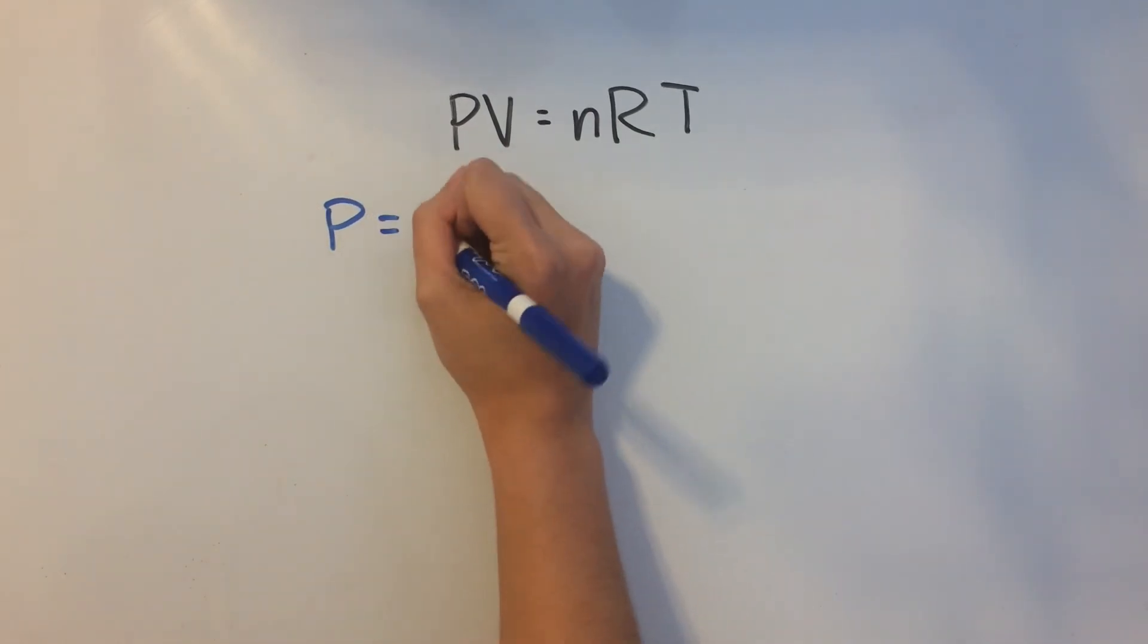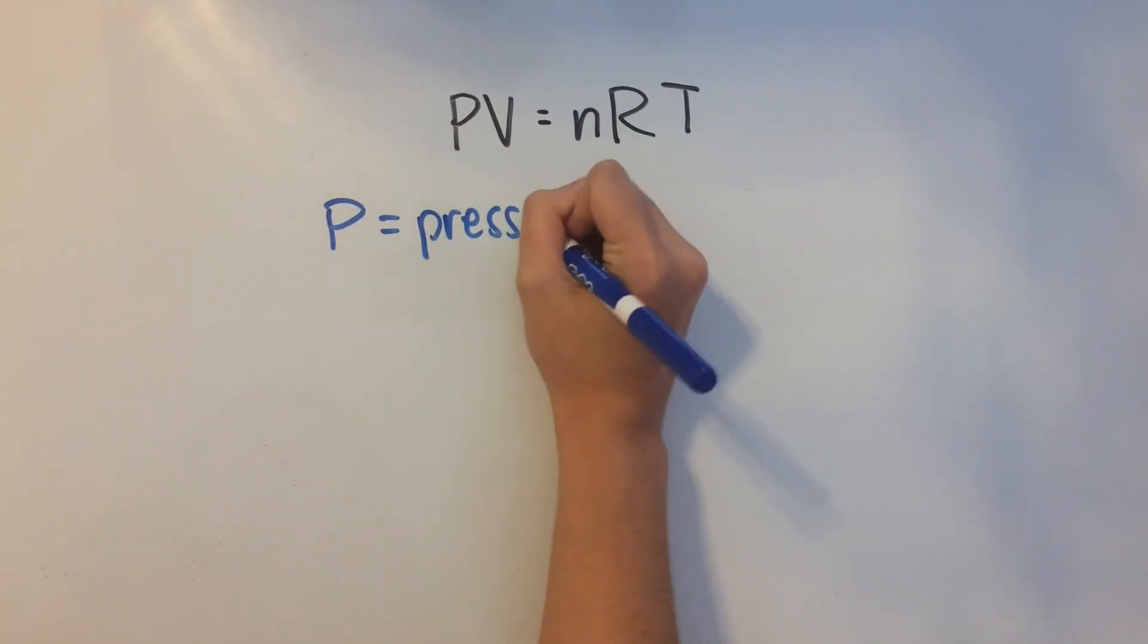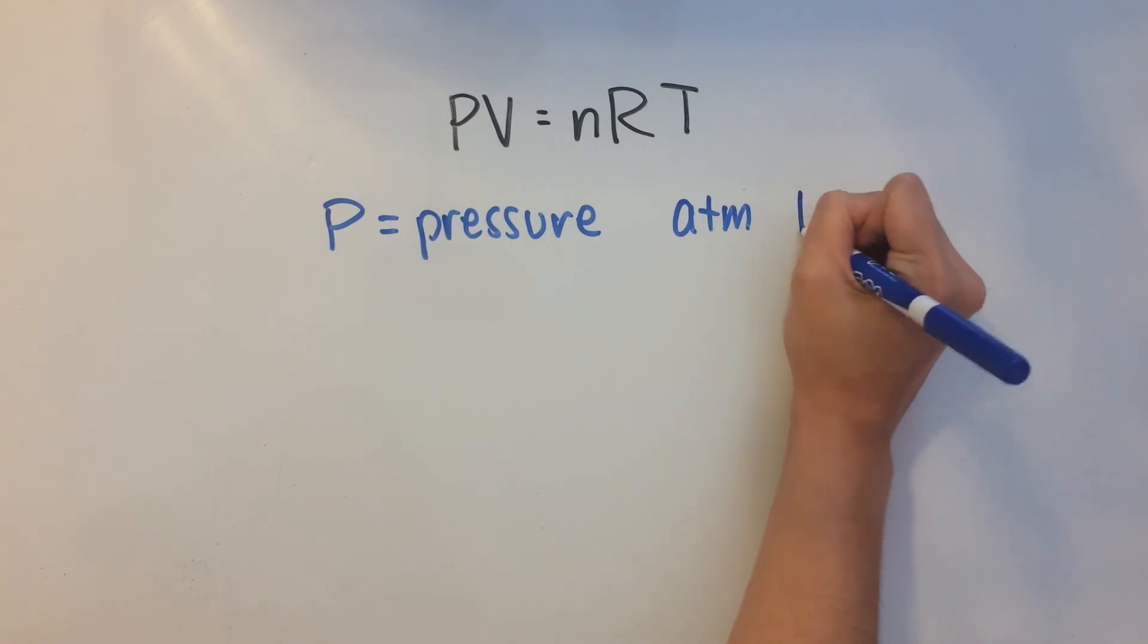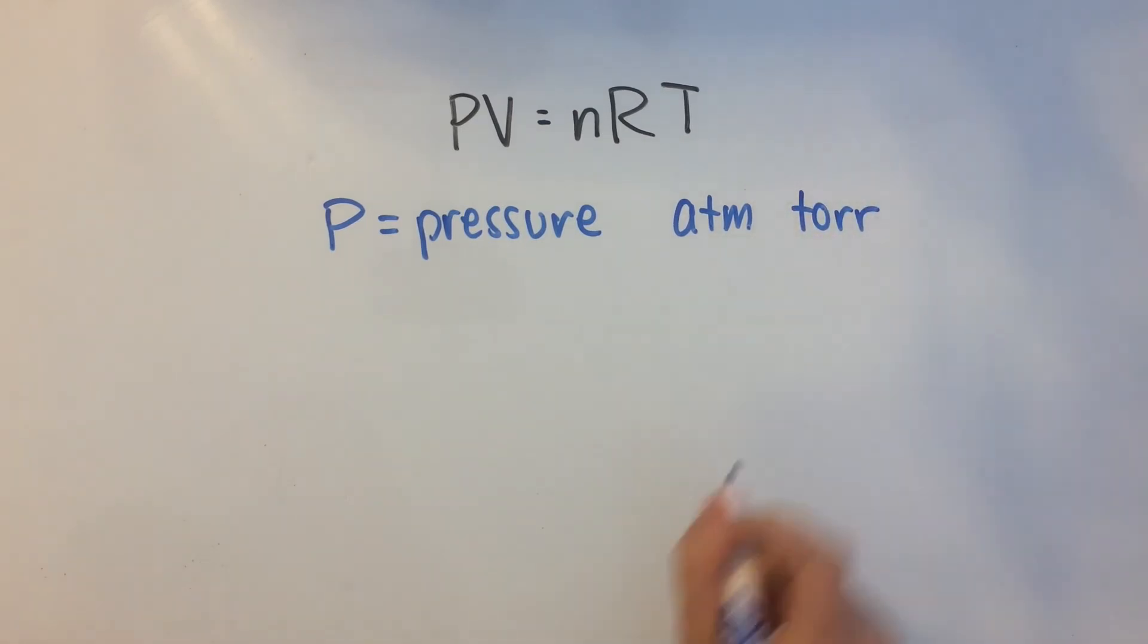P stands for pressure, easy enough. And that is usually measured in atmospheres. We can also measure that in units called torr and a couple of others, but these are basically the ones that you'll see on the AP exam, on the SAT.